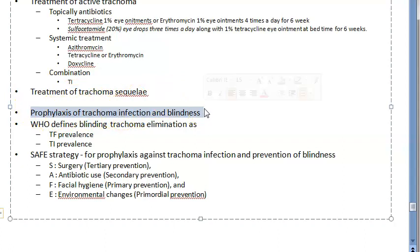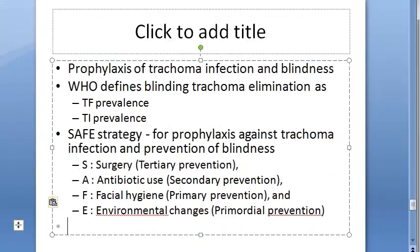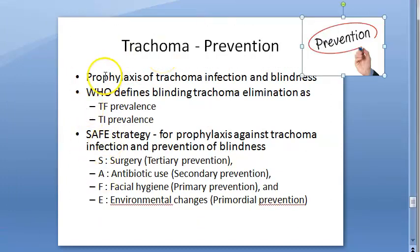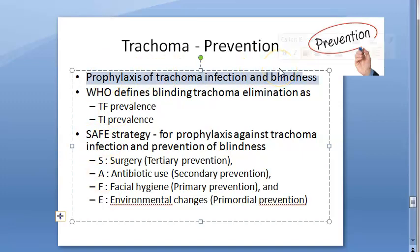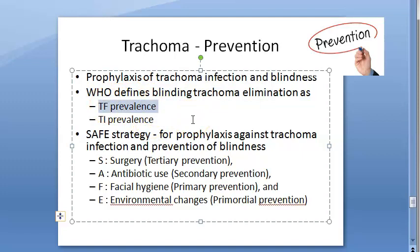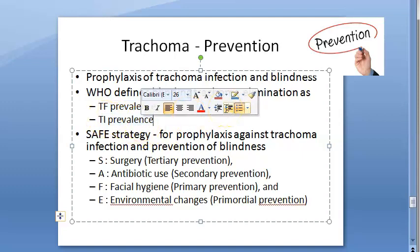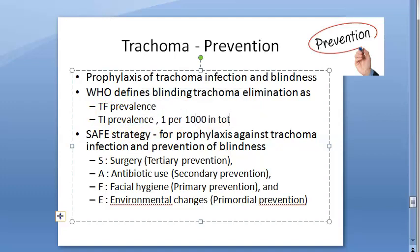Now let us move on to prophylaxis of trachoma infection and blindness. In trachoma, reinfections and recurrences are likely to occur, so prophylactic measures are important. WHO defines blinding trachoma elimination as TF — trachomatous follicular — prevalence below 5% in 1 to 9 year old children, and TI prevalence below 1 per 1000 in the total population.